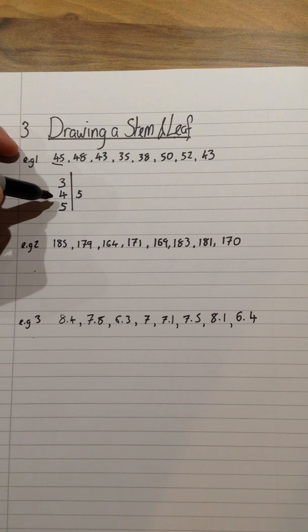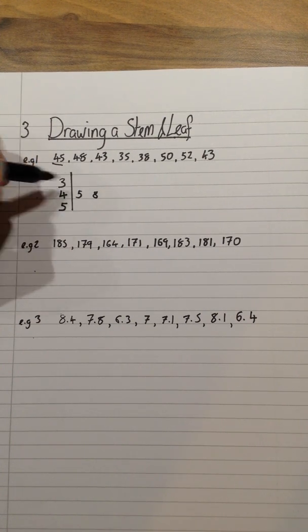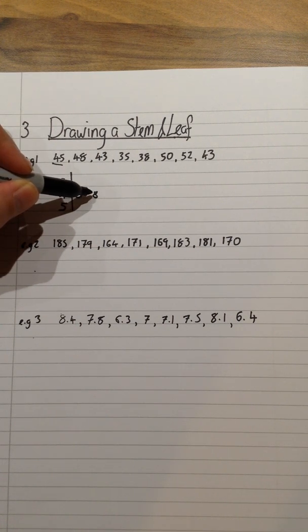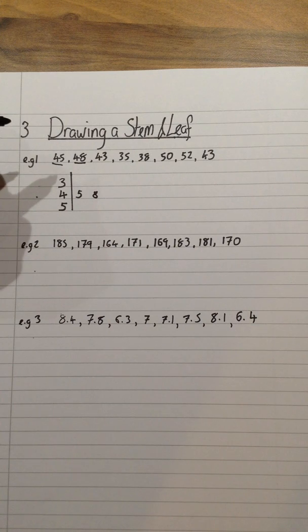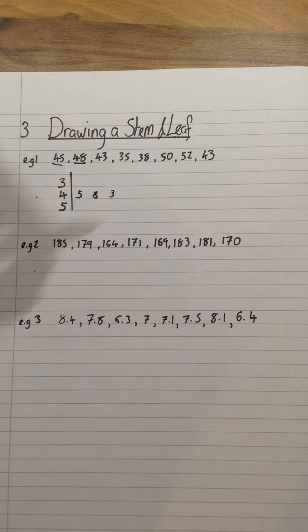48 is my next number. That also goes on the 40s row. So I make sure I leave a little bit of space and put the 8 to represent 48. 43 is the next number. Again, that's on the 40s row. So again, leaving a little bit of space, we put the number 3 just there.